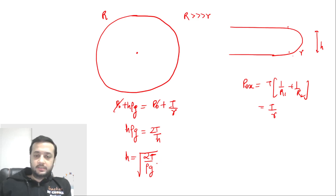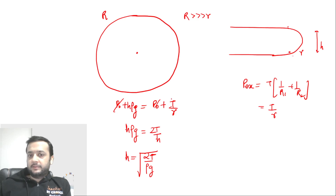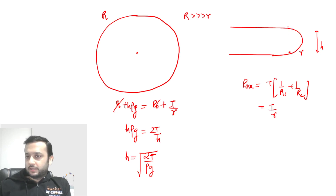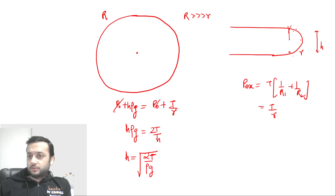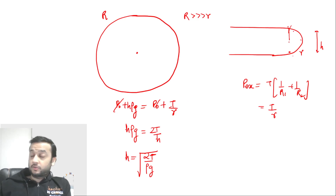Now let us see what is the flaw in this reasoning — why this can't be a semicircle. What we are saying is that here the excess pressure is T/r, and this value equals hρg. The gauge pressure is T/r and r is the semicircle radius. But think carefully: at the top, gauge pressure is zero; at the bottom, excess pressure is T/r; and at the midpoint gauge pressure is hρg. For a semicircle r is constant, so excess pressure T/r is not changing — but gauge pressure is changing with depth. This is of course not possible.